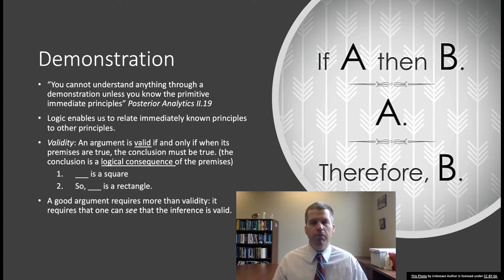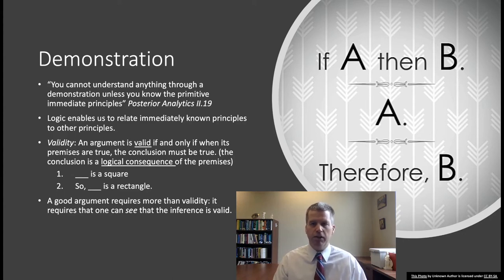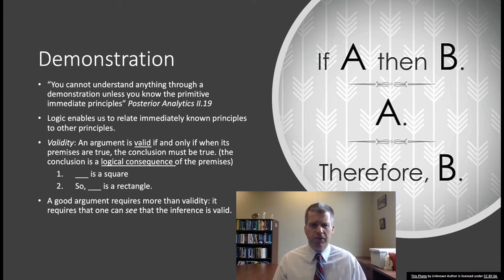Consider another example: 'blank is a square, so blank is a rectangle.' Regardless of what we put in for the blank, there's no way to make the premise true and the conclusion false, because all squares are rectangles. It's very simple.